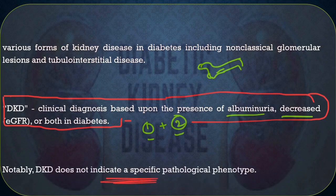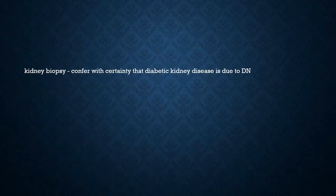Diabetic kidney disease is defined based on proteinuria and decreased GFR, and does not specifically describe any pathological entity, whereas diabetic nephropathy specifically indicates diabetic glomerulopathy. Diabetic kidney disease is a clinical diagnosis of low GFR plus proteinuria. Diabetic nephropathy may also be a cause of this, but that can only be confirmed by kidney biopsy.